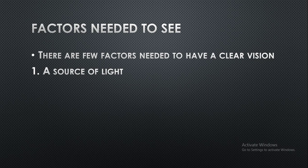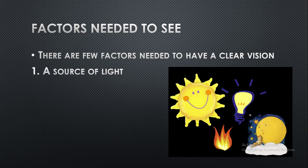A source of light means any object which produces or emits light. If there is a proper source of light, it will produce the light, and as it is an energy source, it will help us to have a clear vision.